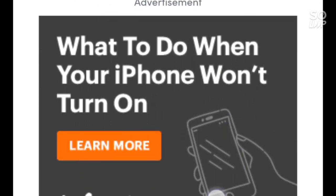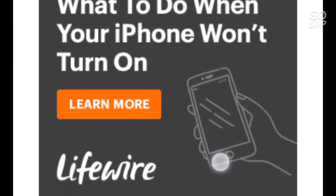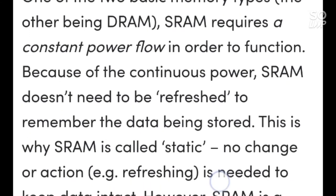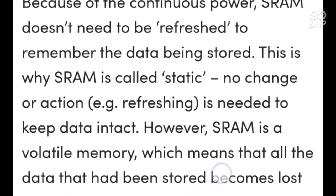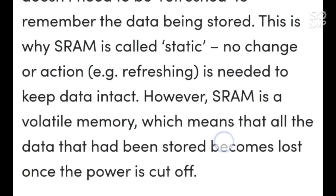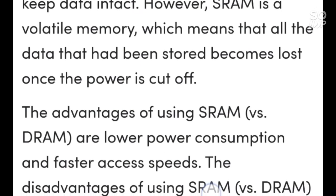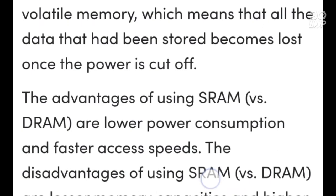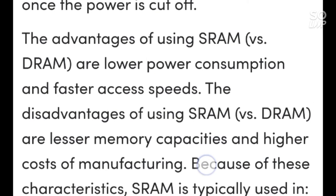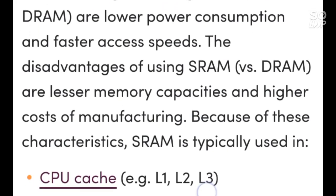Static RAM (SRAM): time in market — 1990 to present. Popular products using SRAM include digital cameras, printers, and LCD screens. SRAM is one of the two basic memory types, the other being DRAM. SRAM requires a constant power flow in order to function. Because of this continuous power, SRAM doesn't need to be refreshed to remember the data being stored — this is why it is called Static RAM.